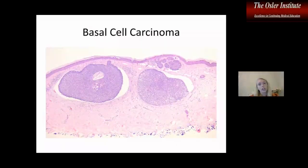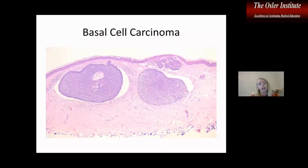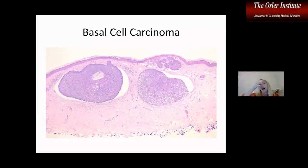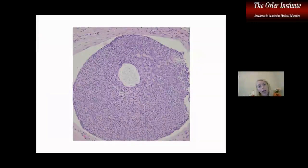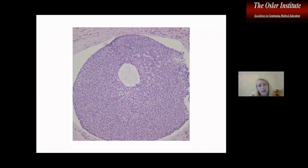Here's an example of squamous cell carcinoma, which all of you have seen at this point. It often has an epidermal connection. There are a bunch of different subtypes: superficial, nodular, infiltrative, micronodular. This is an example of superficial and nodular type. On low power, you're looking for the basaloid appearance to the cells and peripheral palisading with retraction from the surrounding stroma. At higher power, you can see areas of apoptosis and mucin — that fibrinous-looking material in the center of the little cystic area is mucin.